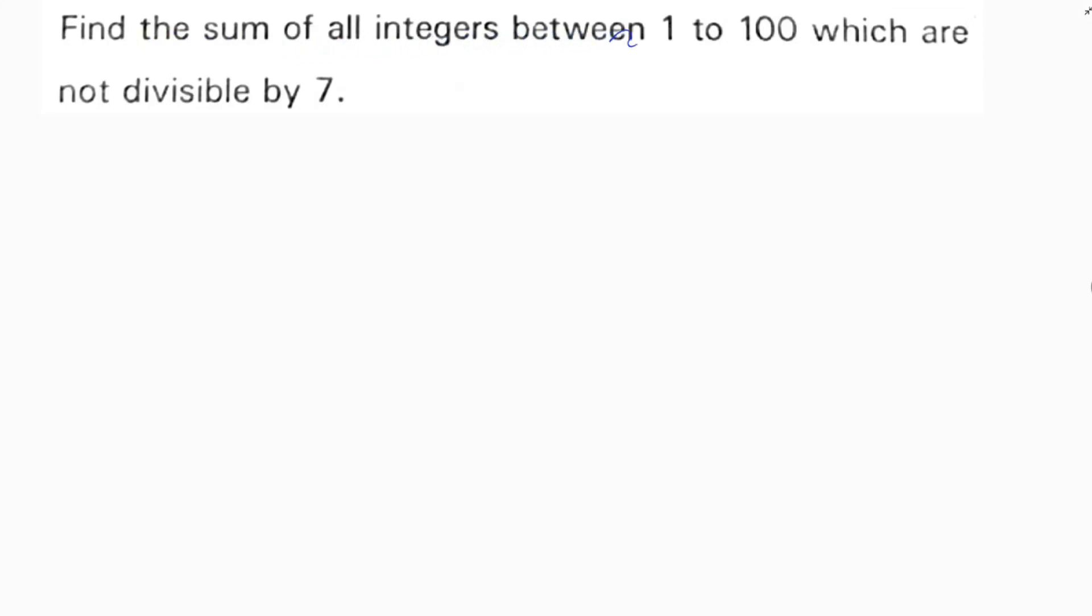Find the sum of all integers between 1 to 100 which are not divisible by 7. So here we should be very careful because the sum of all integers between 1 to 100 which are not divisible by 7 means remaining all the numbers you can take except the multiples of 7.